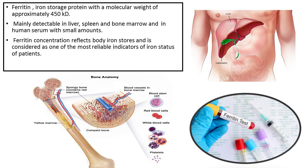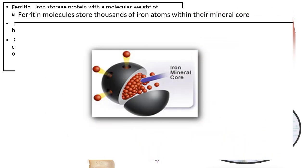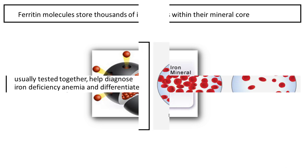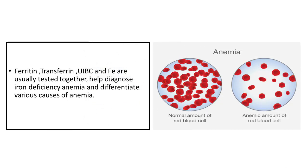Ferritin is also detectable in human serum in small amounts. Ferritin concentration reflects body iron stores and is considered one of the most reliable indicators of iron status. Ferritin, transferrin, UIBC, and serum iron are usually tested together.